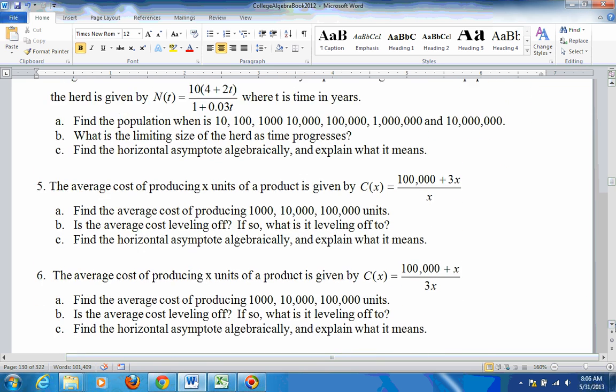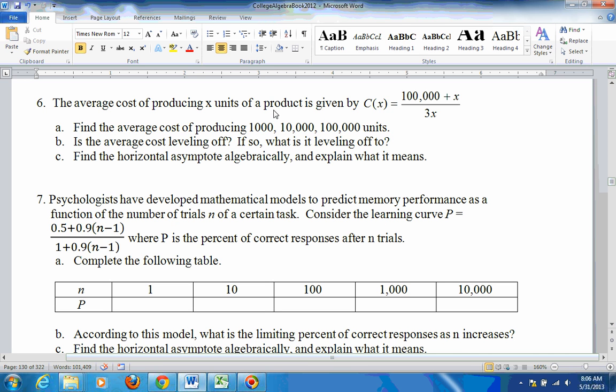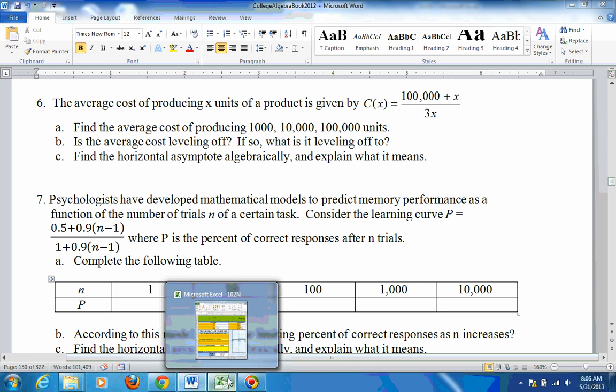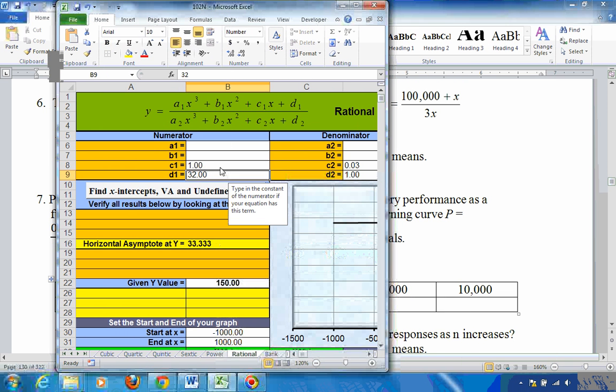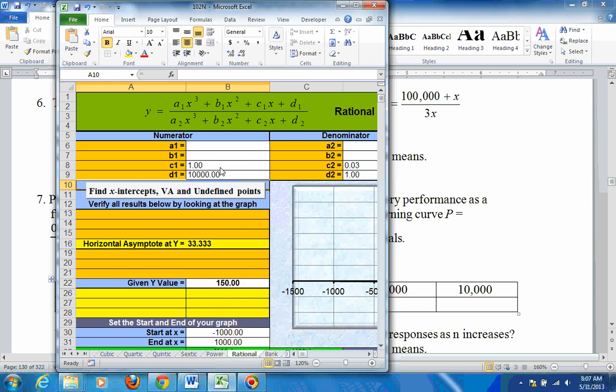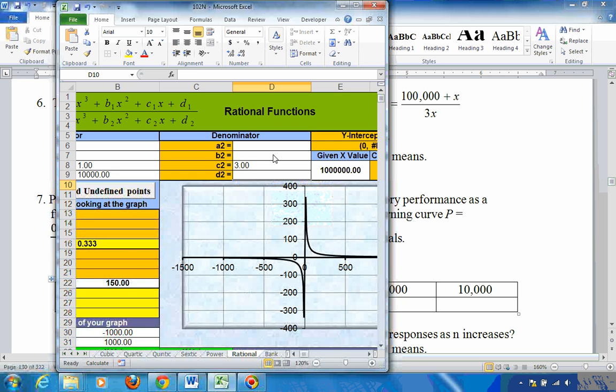4 is the same sort of thing. Let's go to 6. 6 says that the average cost of producing x units of a product is given by this equation right here. You get the average by taking the total cost divided by the total number. That's what the equation is. We would put these coefficients into our rational sheet. So the leading coefficient on that equation is 1. That's a 1 and a 100,000. And then your coefficient on the bottom, your linear coefficient is 3, and there's no constant.